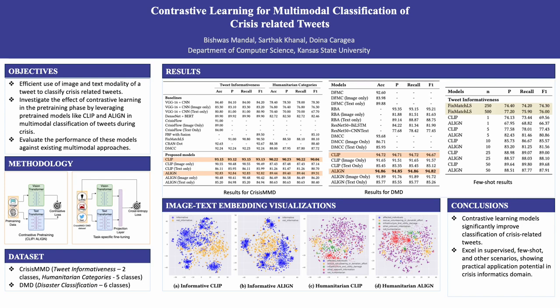Hi everyone. In this work we aim to make use of both the text and image modality to classify crisis related tweets, instead of using a single modality, as it has been shown that additional information from a different modality helps in boosting the accuracy of models. Existing work have focused on this task as learning image and text modality representations separately and then using different fusion strategies to combine the information from these image-text modalities.